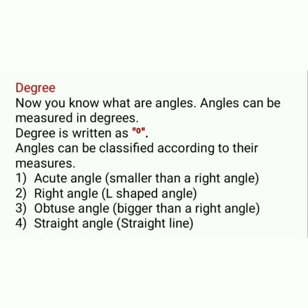Degree. Angles can be measured in degrees. Degree is written as shown here. Angles can be classified as a right angle, smaller than a right angle, and bigger than a right angle. The name for smaller than a right angle is acute angle, and bigger than a right angle is obtuse angle. So angles can be classified according to their measures as acute angle, right angle, obtuse angle, and straight angle.